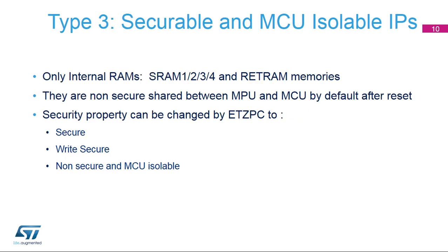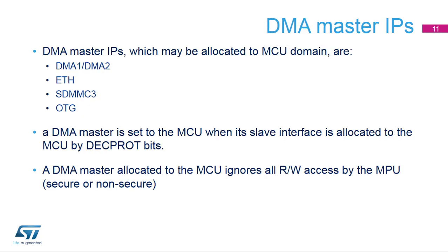Type 3 securable IPs are only internal RAMs: SRAM 1, 2, 3, and 4, and RETRAM memories. They are non-secure and shared between the MPU and the MCU by default after reset. The security property can be changed by ETZPC to secure, write secure, or non-secure and MCU isolable.